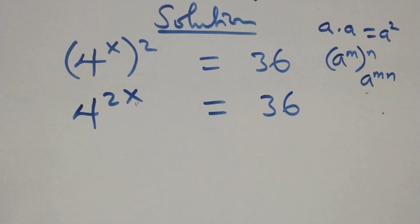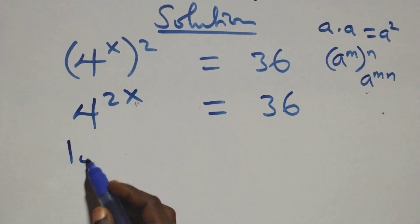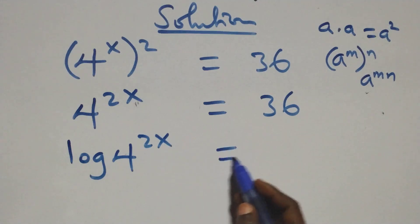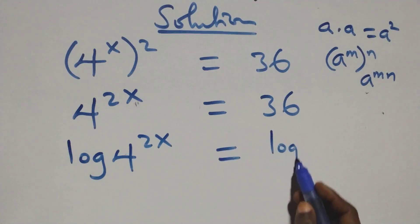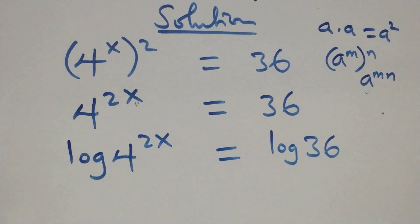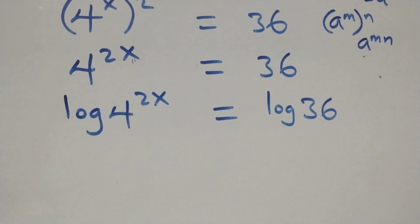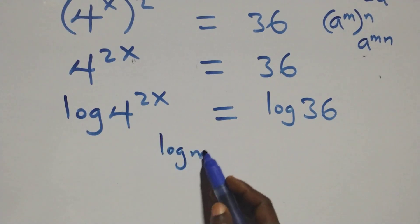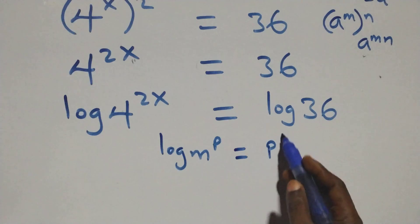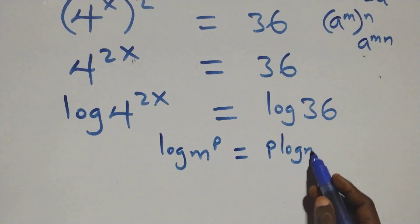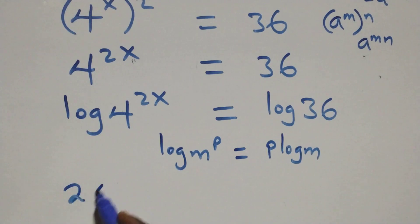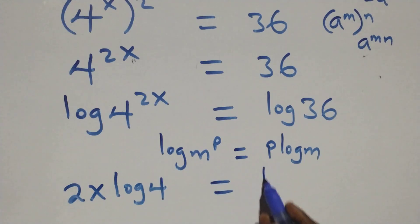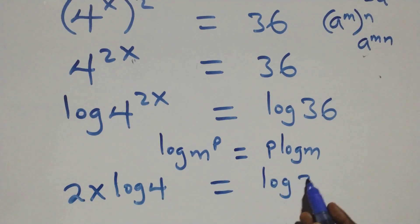Next step, we take the log on both sides. We have log 4 raised to power 2x equals to log 36. Then we apply the power log rule: when we have log m raised to power p, this is the same thing as p log m. So all we have here becomes 2x log 4, equals to log 36.